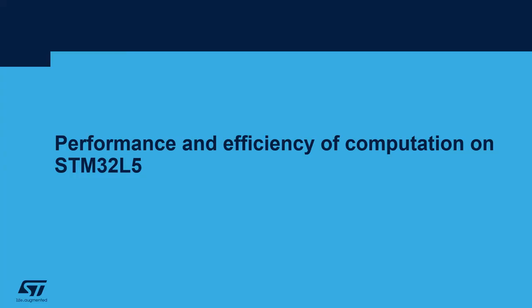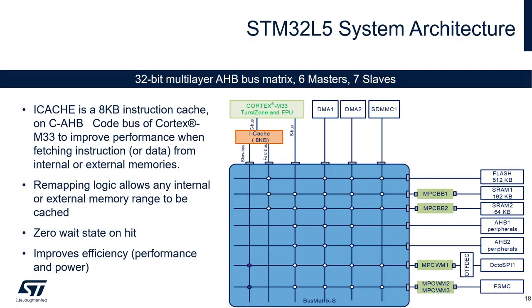In this section, we will have a close look at performance and efficiency of computation on STM32 L5. One of the key factors that affect performance and power efficiency of a microcontroller is the system-level architecture. Most applications run their code from either internal flash or an external one, and sometimes place critical code into SRAM. It's often the flash that limits performance at higher frequencies. However, this was largely mitigated on STM32 L5 thanks to a low number of flash wait states and a cache that resides between the Cortex core and the memories.